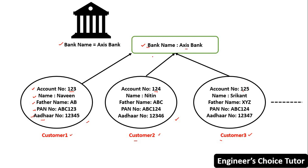Let me explain from another angle. The bank name has the value Axis Bank — it is a common property for all objects, meaning all customers here belong to Axis Bank. Such a variable should be declared as a static variable. Static variables generally store common values which are suitable for all objects. If the value of a variable does not vary from object to object, then it is not recommended to declare it as an instance variable; we should declare it as a static variable.